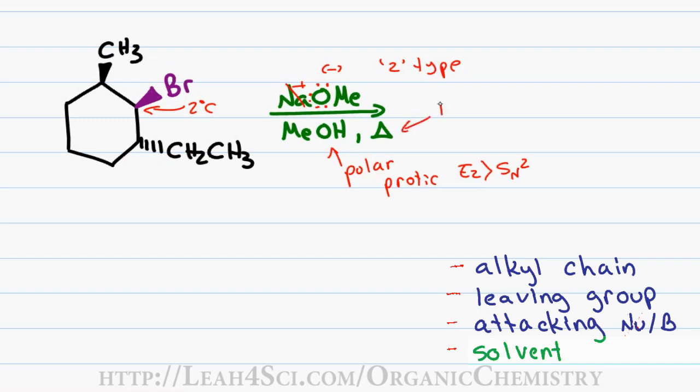Finally we have a triangle which represents heat. Heat helps stabilize that elimination intermediate and so E2 is favored one more time over SN2.